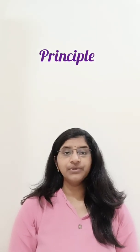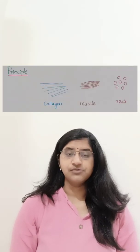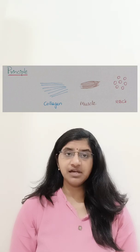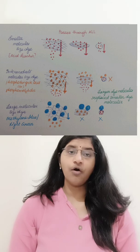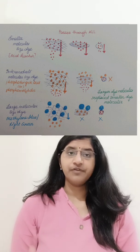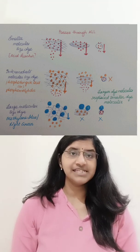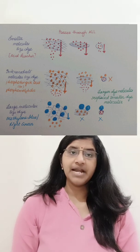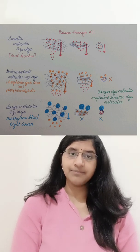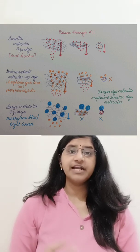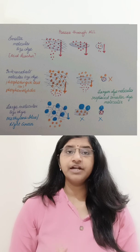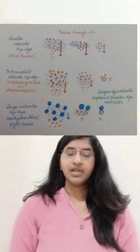Now coming to the principle. As I told you, it is to differentiate between collagen, muscle fibre, and RBCs. The principle of Masson's trichrome stain is basically based on the porosity of the substance. For example, collagen is highly porous compared to muscle and RBCs.